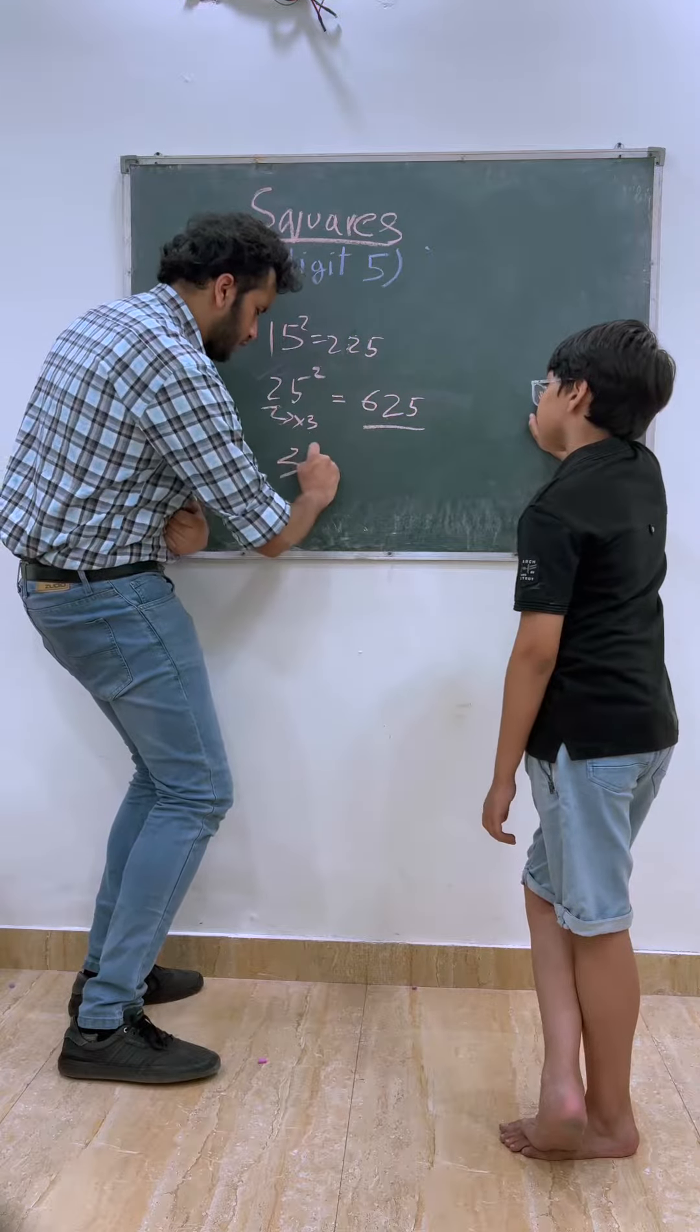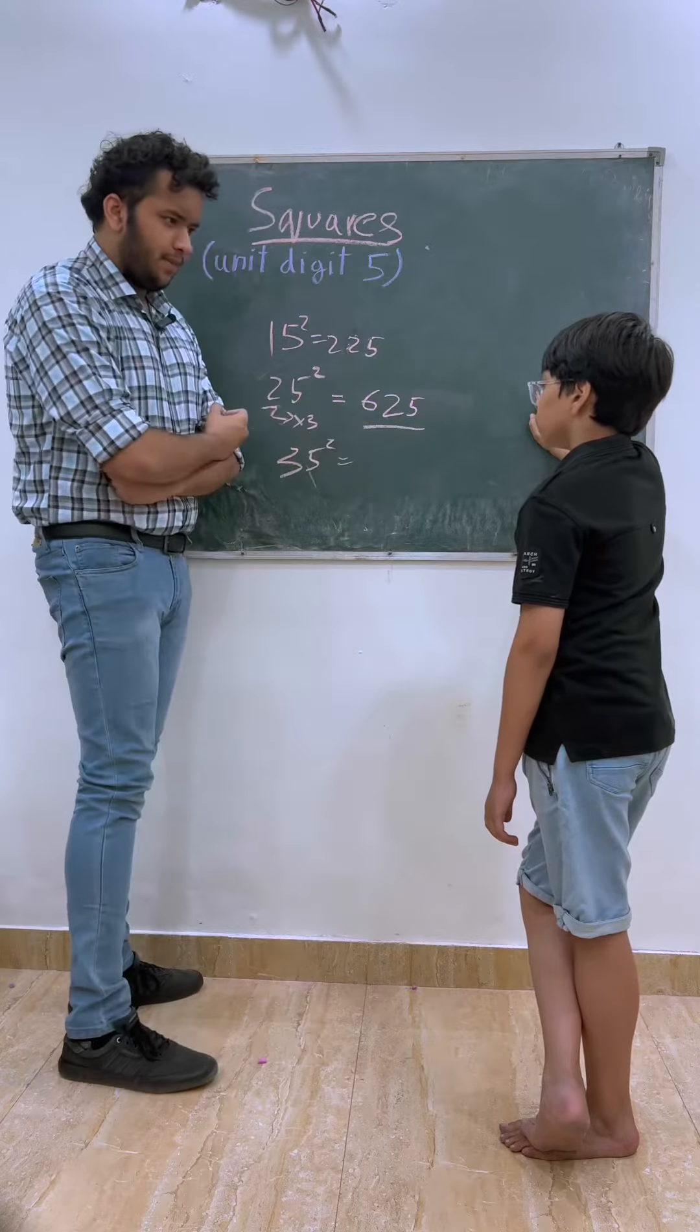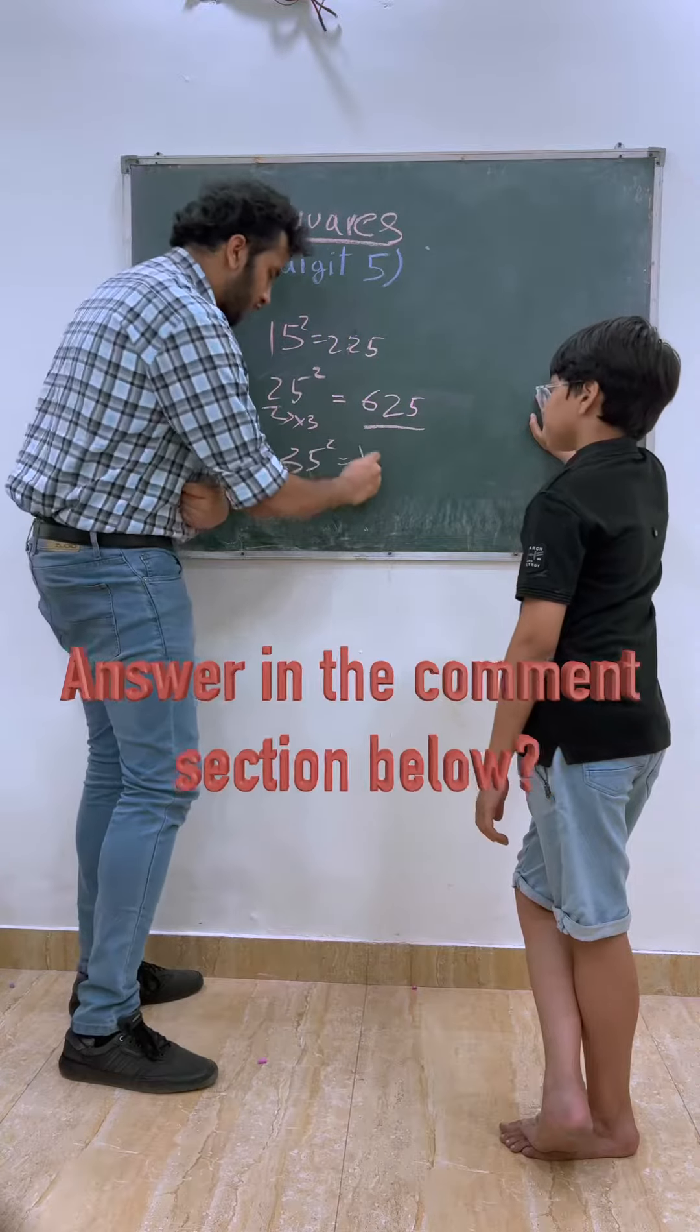Tell me quickly. How much is 35 square? How much is it? 1,225. Very good.